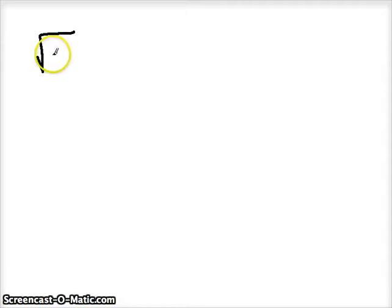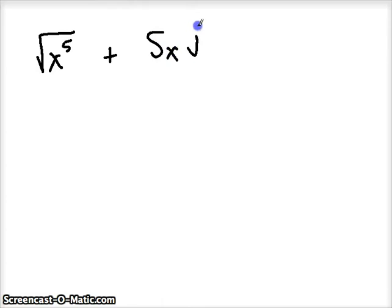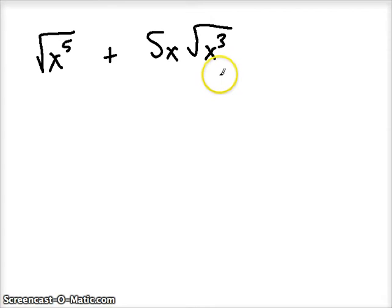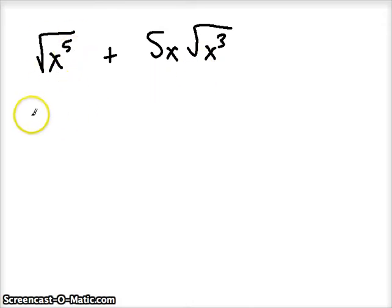Now let's get into more challenging examples where we have to simplify first. If I have the square root of x to the fifth plus five x times the square root of x cubed, I can't add these right now — even though I have the same index, I don't have the same radicand. So we need to simplify first. If I take the square root of x to the fifth, I'll factor all the way down: x to the fifth is x times x times x times x times x.